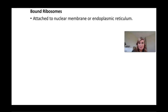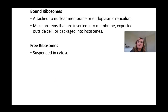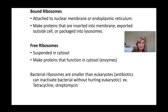Sometimes ribosomes are bound to the nuclear membrane of an endoplasmic reticulum, giving it a rough-looking structure — that's where the rough ER gets its name. It makes proteins that are inserted into the membrane, exported outside the cell, or packaged into lysosomes. Free ribosomes are simply floating around in the cytoplasm and help make proteins that function as enzymes in the cytosol. Bacterial ribosomes are much smaller than eukaryotic ribosomes, and antibiotics can inactivate these bacterial ribosomes without hurting the eukaryotic cell, effectively destroying the bacteria by cutting off its protein production.